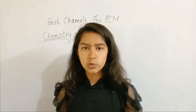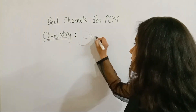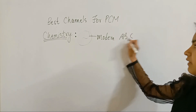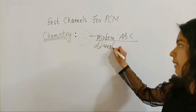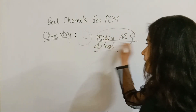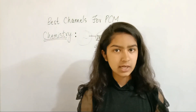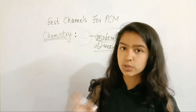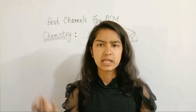So first we will start with chemistry. I have mostly used two books for chemistry. I used Modern ABC — it is very good for chemistry. For the first part of chemistry, which covers 10 chapters including coordination compounds, I made notes from Modern ABC, and some topics I made from NCERT.